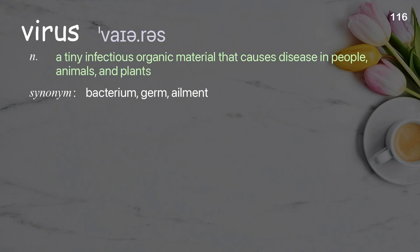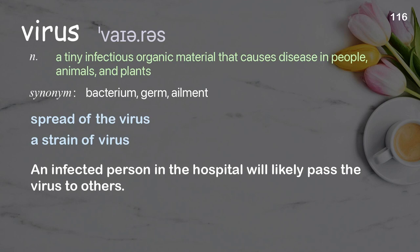Virus: a tiny infectious organic material that causes disease in people, animals, and plants. Examples: spread of the virus, a strain of virus. An infected person in the hospital will likely pass the virus to others.